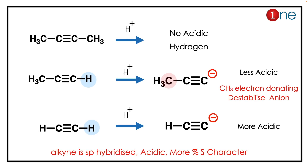Acidity is the key concept here. You have to consider which compound loses the H+ ion most readily. Alkynes are acidic due to their sp hybridization — the more s-character in the bond, the greater the acidity, so the H+ is lost more easily.